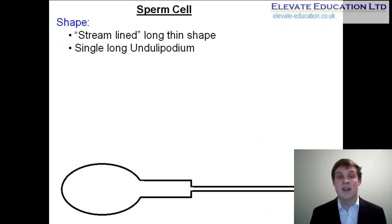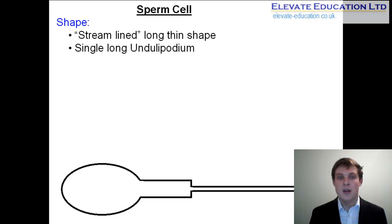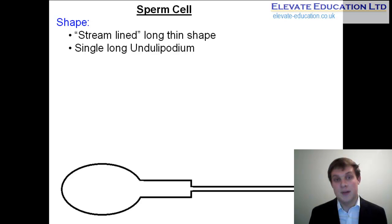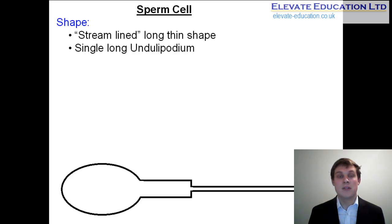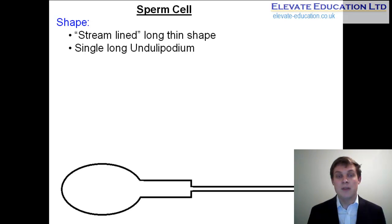One of the specialized cell groups we see in multicellular animals are the gametes — the sex cells. In humans, the male gamete is the sperm cell, and the first way it is specialized is through its shape. The overall shape is long and thin — a streamlined shape designed to reduce drag. It also has a single long undulipodium at the rear of the cell, a long hair-like projection that, similar to flagella in prokaryotic cells, enables the cell to move by whipping backwards and forwards.